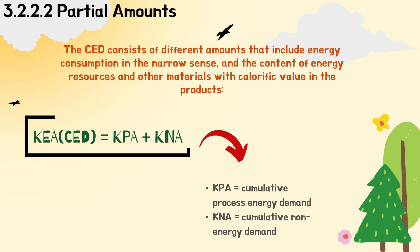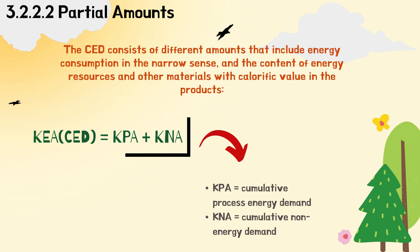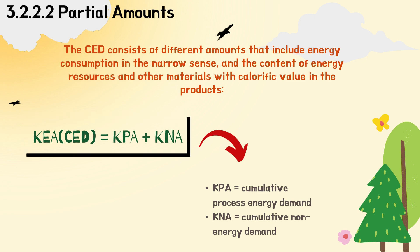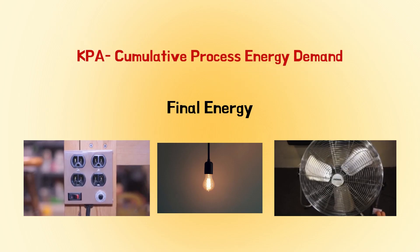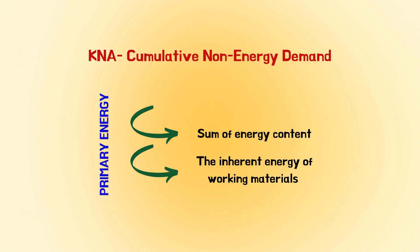Partial amounts: the cumulative energy demand consists of different amounts that include energy consumption in processes and the content of energy resources and other materials with calorific value in the product. This is shown in the formula: KEA, which is cumulative energy demand, equals KPA, which is cumulative process energy demand, plus KNA, which is cumulative non-energy demand. KPA encompasses all traded final energy for heat, power, light and generation of other useful electricity valued as primary energy through overall efficiency of energy supply. KNA is the sum of the energy content of all energy carriers employed for non-energy purposes and the inherent energy of working materials valued as primary energy.